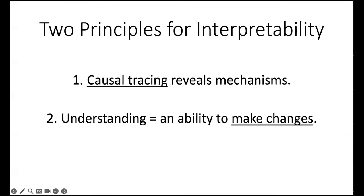So there are a couple of principles for interpretability that I would advocate. In the old days, we would look for saliency maps, which are correlative signals of what kinds of things correlate with certain behavior of the model. But I think the most interesting things are causal. Causal tracing — looking for causal effects — really does a better job at revealing mechanisms. It's harder to get fooled when you're looking for causal effects. But then we also work with such large systems that sometimes you have causal coincidences. So you really want to verify your understanding by checking your ability to actually make changes based on what you've learned, and see if those changes generalize over other situations.